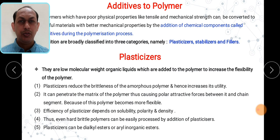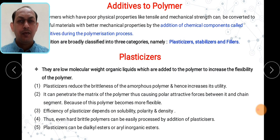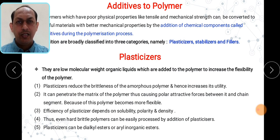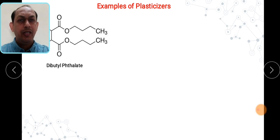The efficiency of plasticizers depends upon the solubility, polarity, and density. These are the factors which are mainly considered for plasticizer properties. Even hard brittle polymers can be easily processed by addition of plasticizers, increasing their applicability. Generally, plasticizers can be dialkyl esters or aromatic inorganic esters. In the next slide we will see the structure of these compounds.